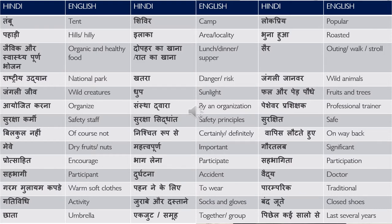बिल्कुल नहीं — of course not, or not at all. निश्चित रूप से — certainly or definitely. In dialogues, they often say 'certainly yes, this is what we will definitely do' — निश्चित रूप से. वापस लौटते हुए — on the way back. मेवे — dry fruits or nuts. This also comes in the context that during camping we'll be eating dry fruits. महत्वपूर्ण — important. ग़ौरतलब — significant.